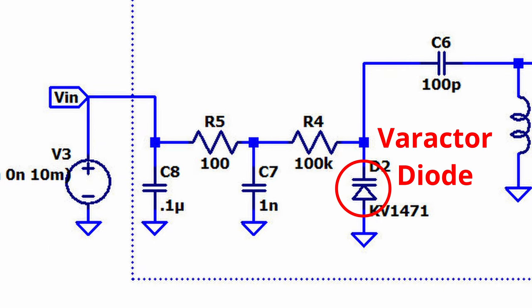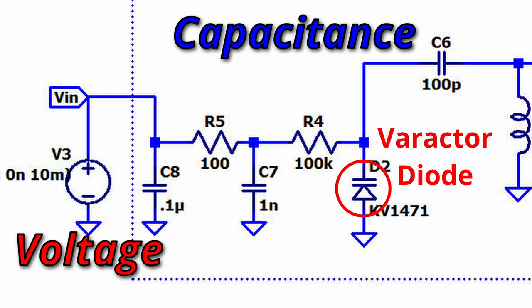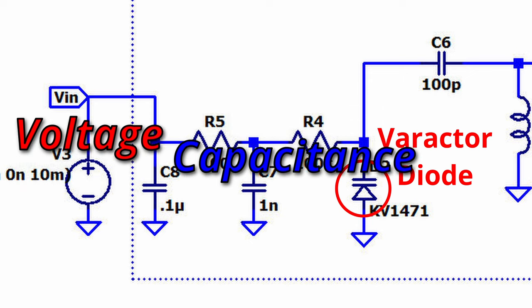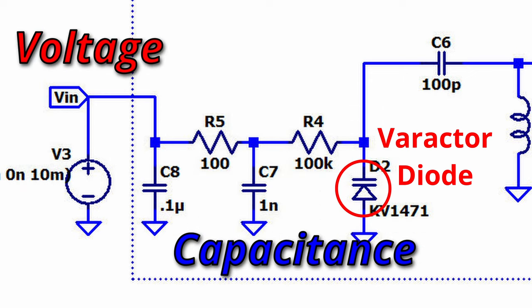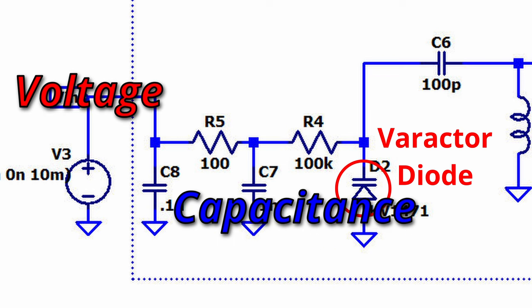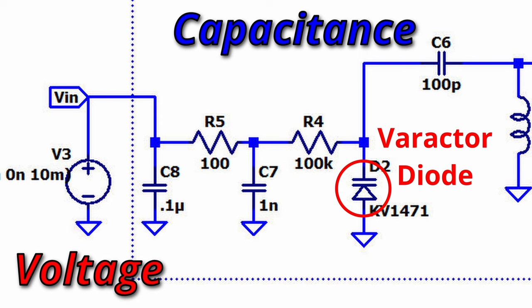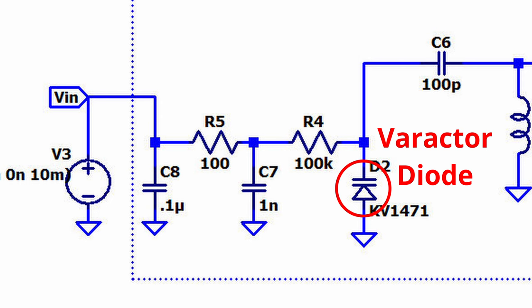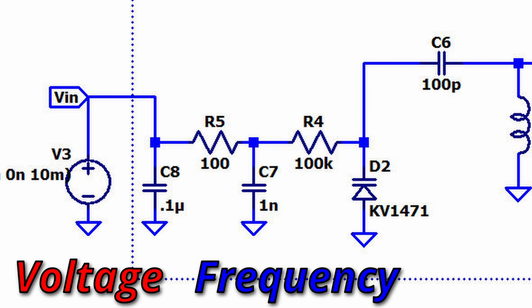This is called a varactor diode. It is operated reverse biased. Now, without getting into the physics behind how they work, as the diode becomes more and more reverse biased, the capacitance seen across the diode decreases. The less reverse biased the voltage across the diode, the greater the capacitance. In reality, all diodes have this property, but these varactor diodes are especially designed to exploit this property to a much greater degree. In its placement in our oscillator, this means that when we increase the input voltage, its capacitance goes down, and the output frequency of the oscillator goes up.